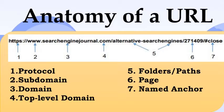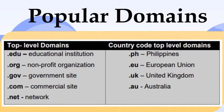Next is the path. The path typically refers to a file or directory on the web server — for example, directory/file.php. Sometimes the file name won't be specified, so a web browser will automatically look inside the folder for a file called index or default. A fragment is an internal page reference, sometimes called an anchor, that usually appears at the end of a URL and begins with a hash character followed by an identifier. It refers to a section within a web page. Here are the popular top-level domains: .edu for educational institutions, .org for non-profit organizations, .gov for government sites, .com for commercial sites, and .net for networks.